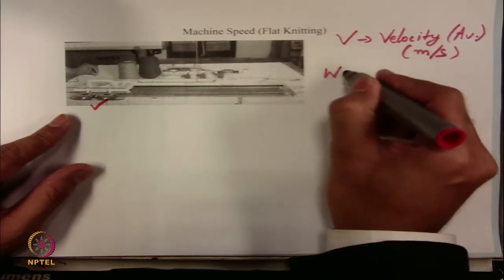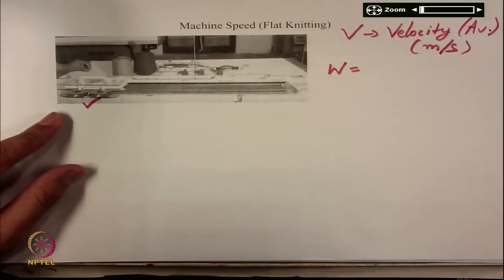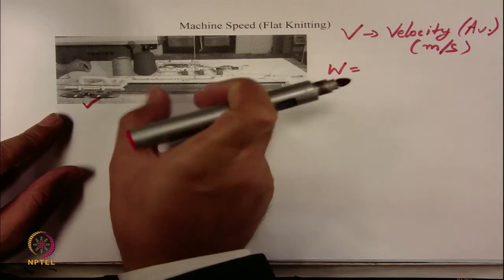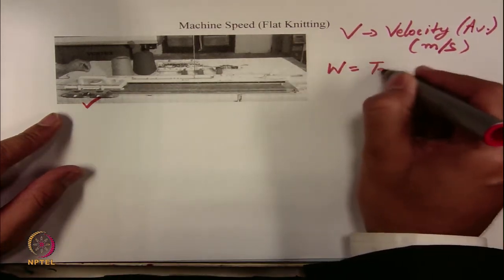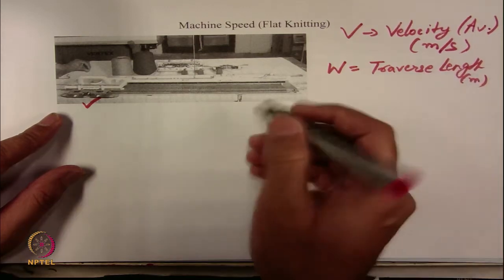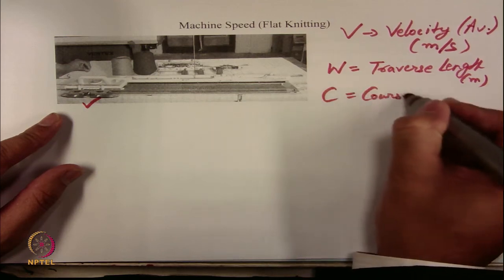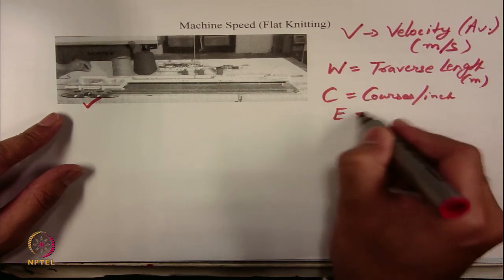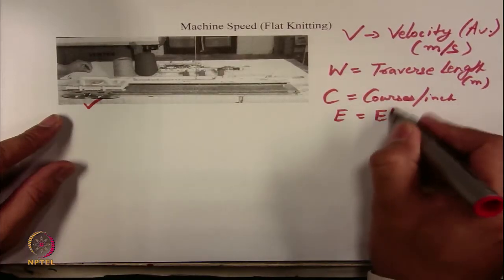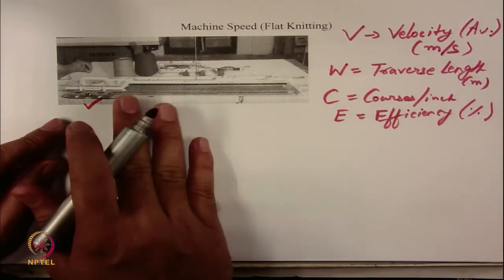The other variable is traverse length (W). The bed is almost 1 to 2 meters in length, and sometimes you might not use the entire length — only a selected portion of the bed by counting the number of needles. So W is the traverse length in meters. Once the fabric is produced, you can easily count the courses per inch (C). E is the efficiency — for example, if the worker is taking some break during production. Once you have these 4 variables, you can find the production.